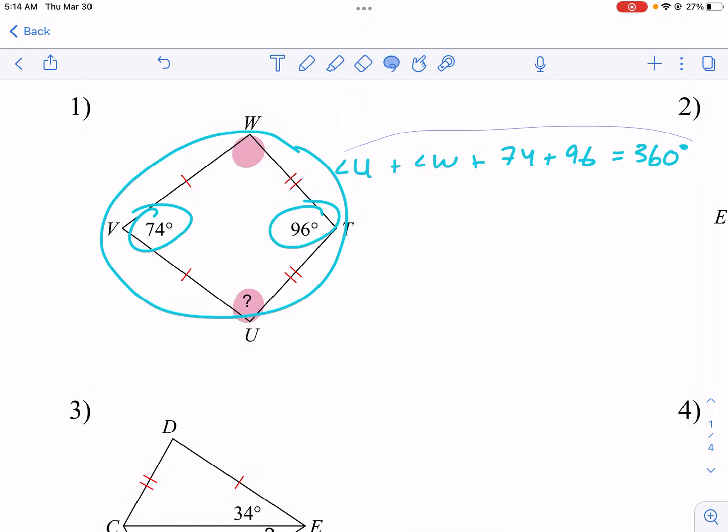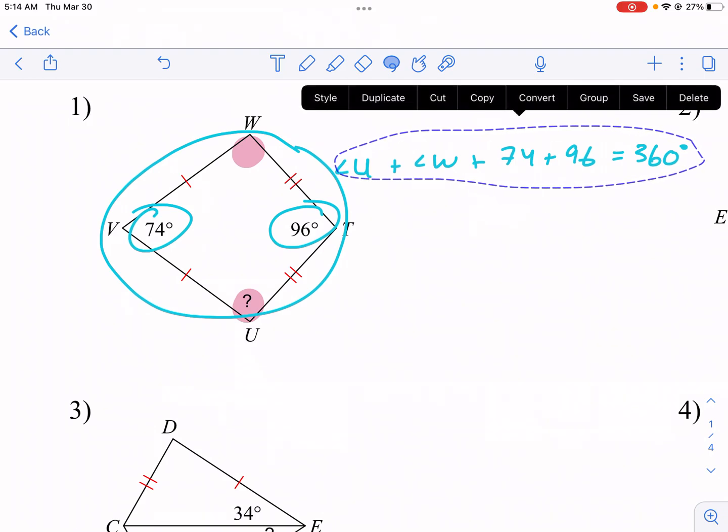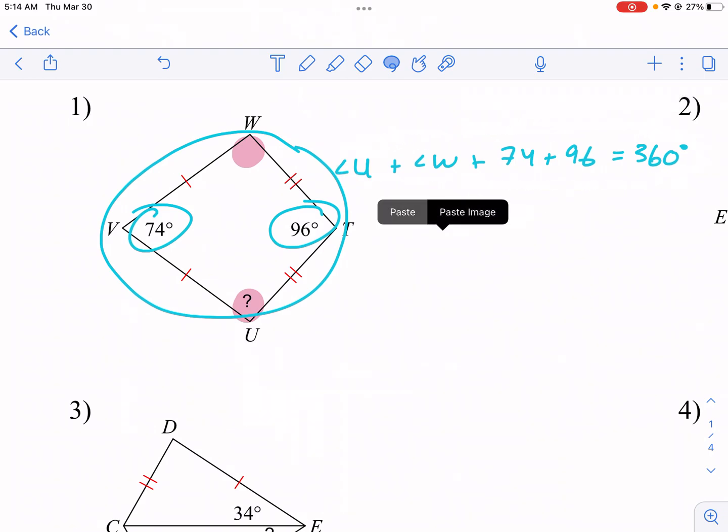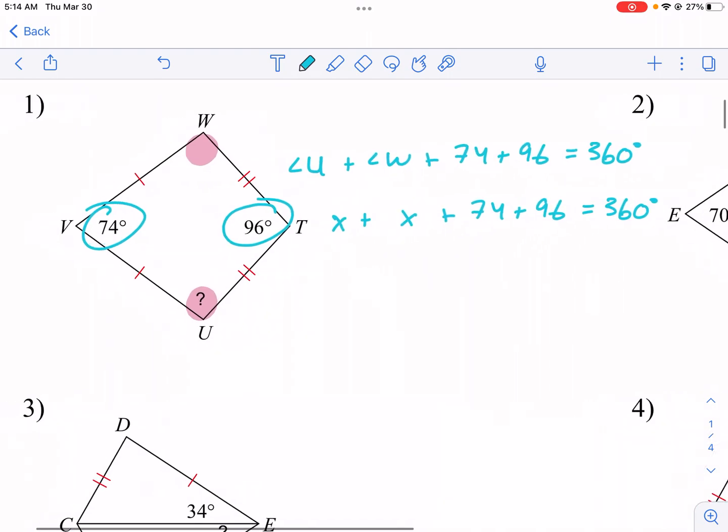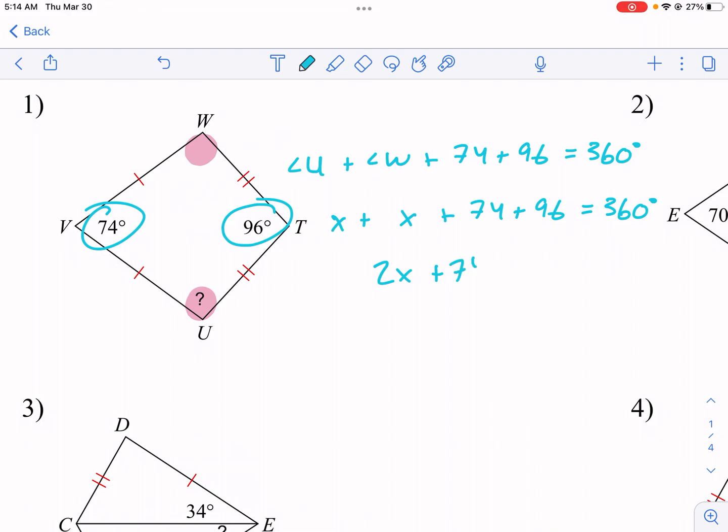So let me go ahead and show that. I'm going to rewrite it, copy, paste, and I'm going to change this to a variable. So I'm going to just call this x instead. So I have x plus x plus 74 plus 96 equals 360, which becomes 2x plus 74 plus 96 equals 360.